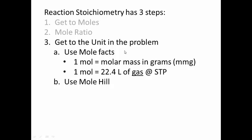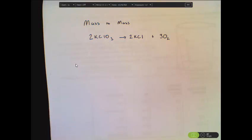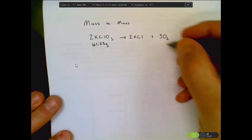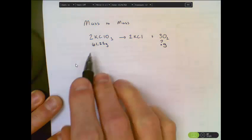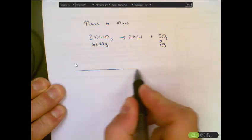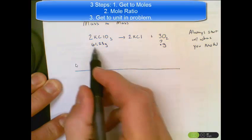Here's an example problem: a student decomposes 61.25 grams of potassium chlorate. How many grams of oxygen form as a result of this decomposition? You're going to notice that I'm starting with a balanced chemical equation, which is a must for any stoichiometry problem. Underneath the balanced equation, we add the information provided: 61.25 grams of potassium chlorate, and we want to solve for grams of oxygen. Always start with what you know.